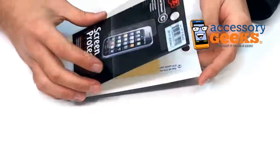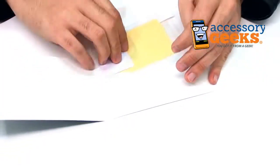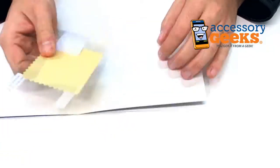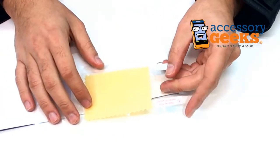So let's just open up the package and see the contents. Alright, the HTC Evo 4G Screen Protector comes with a screen protector, of course.